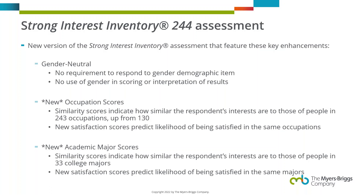We also have a new section of academic major scores. This is the first time in the Strong's history that we've had quantitative scores around academic majors rather than conceptual mappings through basic interest scales. These academic major scores are available for 33 broad academic majors for college. Like the occupation scores, we have both a similarity score and a satisfaction score for each major. This will be really useful for practitioners helping students in college or high school figure out what course of study is a good fit for them.